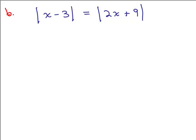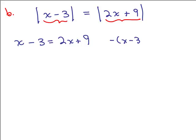Here's problem B. We have an absolute value of something equaling the absolute value of something else. That means whatever's in each of these is either the same exact number or opposites. So we write: either x minus 3 equals 2x plus 9 — the same number — or they're opposites. I'll take the opposite of x minus 3, and that should be the same as 2x plus 9. You could have also written x minus 3 equals the opposite of 2x plus 9 — it doesn't really matter.